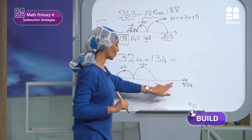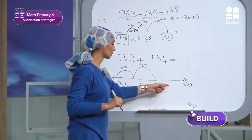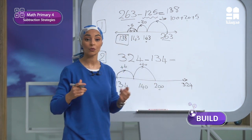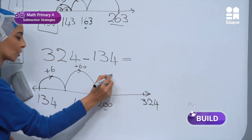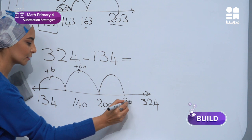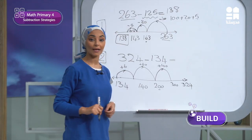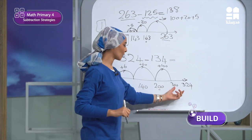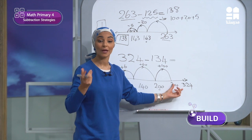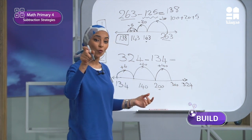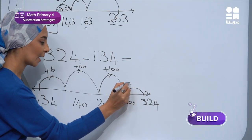Still I need to reach 324. From 200 to 300, I will jump another 100. So this is plus 100, reaching 300. Then from 300 I want to reach 324, so I will jump only 24 more to reach 324.